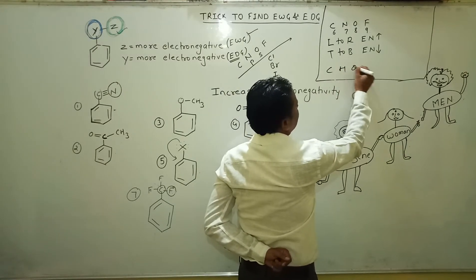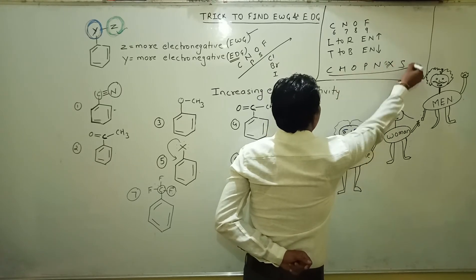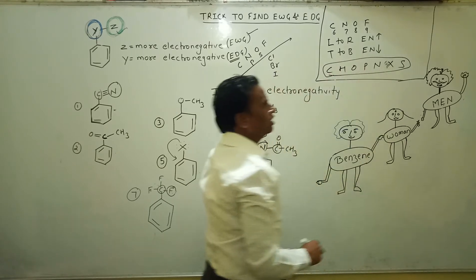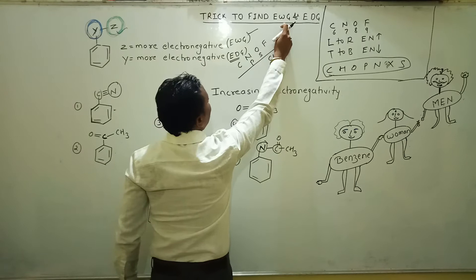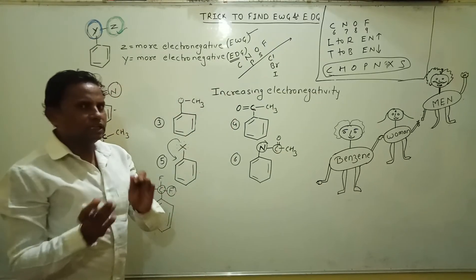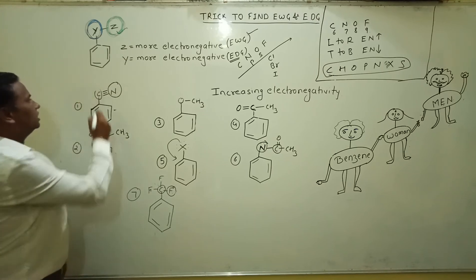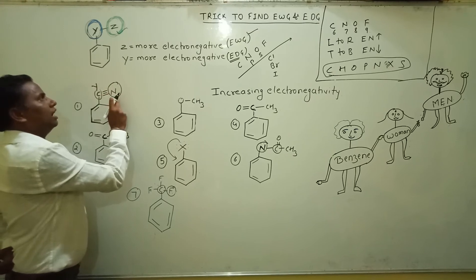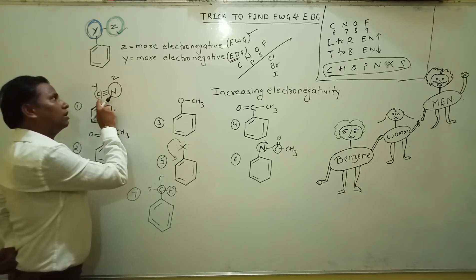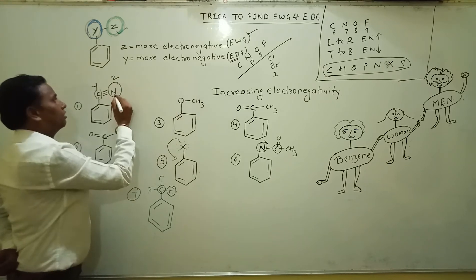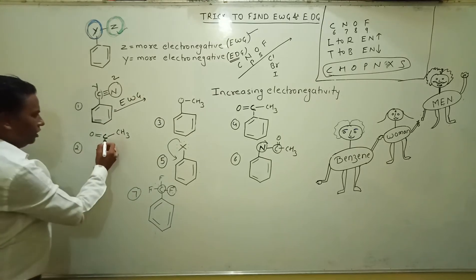All organic chemistry compounds are made up of only carbon, hydrogen, oxygen, phosphorus, and nitrogen. We compare the electronegativity of only these elements. For the first example, benzene has a CN group attached. C is Y and N is Z. Among these two, nitrogen is more electronegative than carbon, therefore CN is an electron withdrawing group.